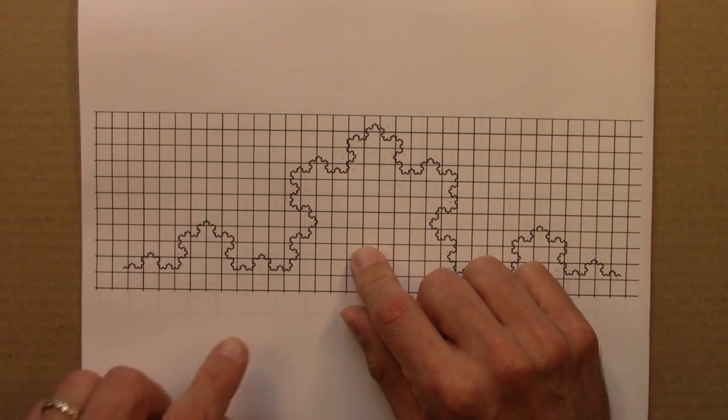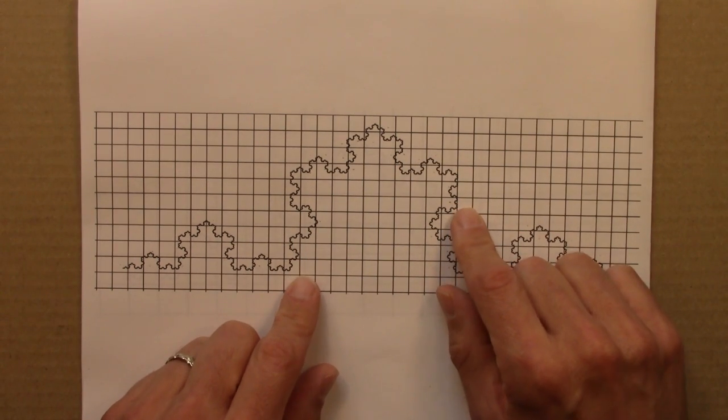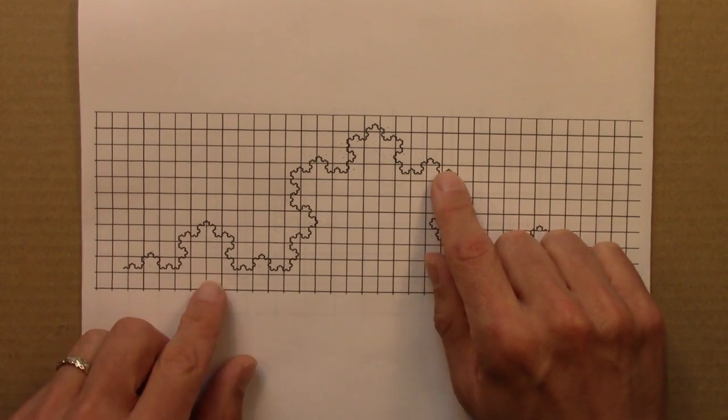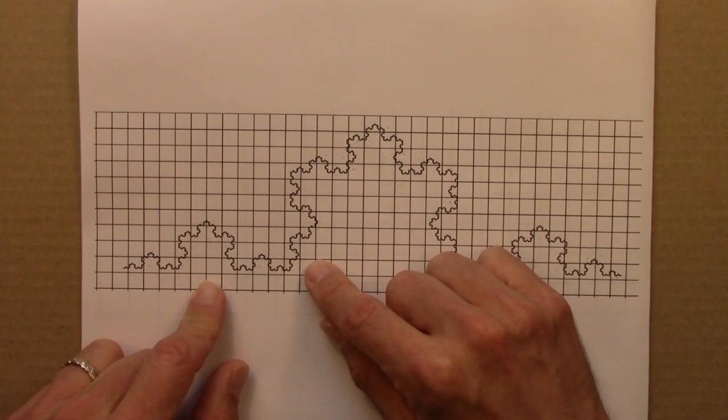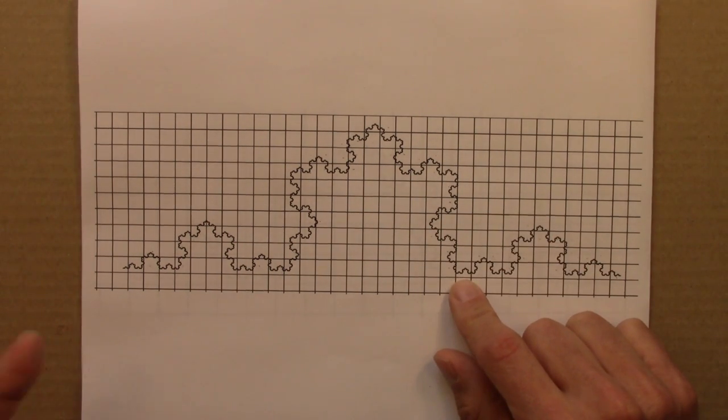Even then, there's going to be some limit. We can represent the Koch curve mathematically to arbitrary precision, but at some point our computer's going to run out of memory. There's going to be so many boxes. The number of boxes we need grows exponentially.